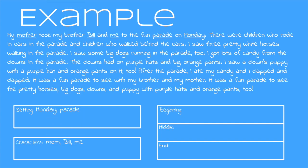Now we're going to underline all of the events in the story — that's the stuff that happens, so we want to look for action. The first sentence, 'My mother took my brother Bill and me to the fun parade on Monday,' really shows us some action. So the mother is taking me, and I'm going to put that in the beginning: Mom took me and Bill to the parade. Now we want to look for the next action. 'There were children who rode in cars in the parade and children who walked behind the cars' — that's describing the parade but it's not me, mom, or Bill doing anything, so we're not going to include it in our events. Remember, we're looking for just the most important events.